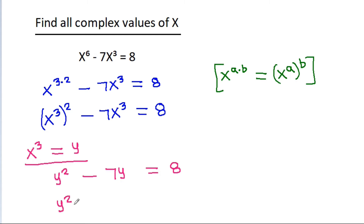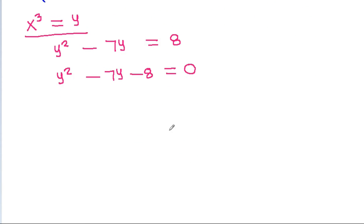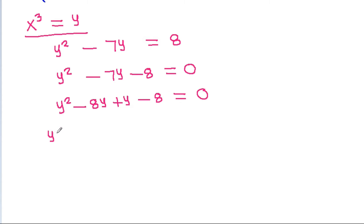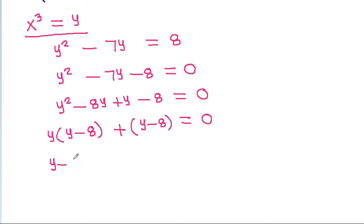Rearranging, we get y square minus 7y minus 8 is equal to 0. We split the middle term: y square minus 8y plus y minus 8 equals 0. Taking y common from the first two terms gives y times (y minus 8), plus 1 times (y minus 8), equals 0. Taking y minus 8 common, we get (y minus 8)(y plus 1) equals 0.